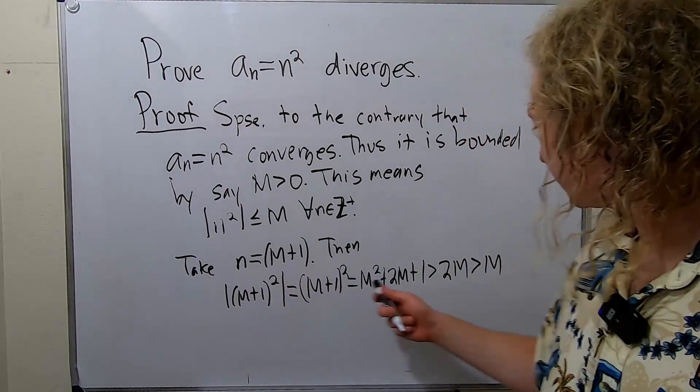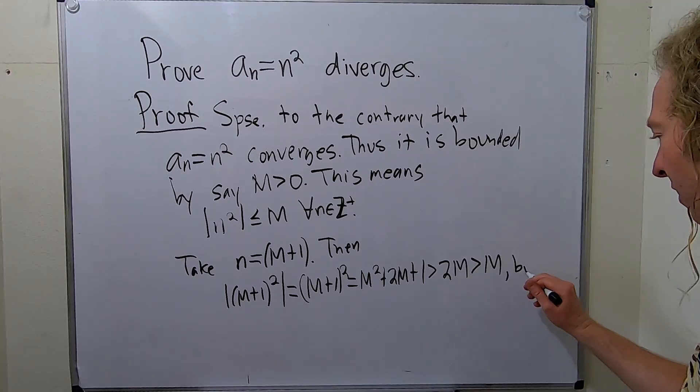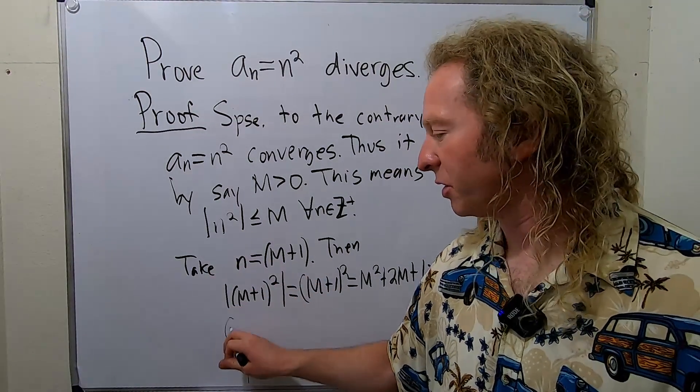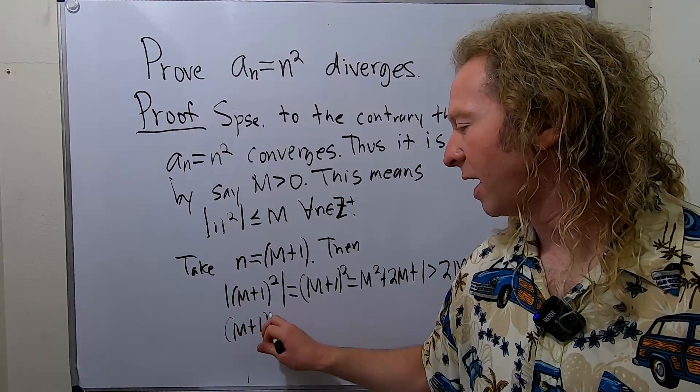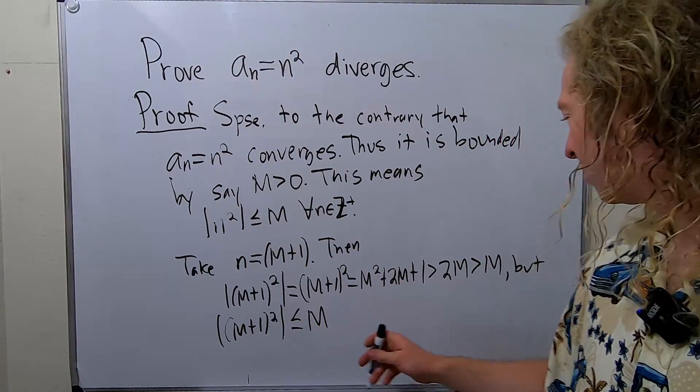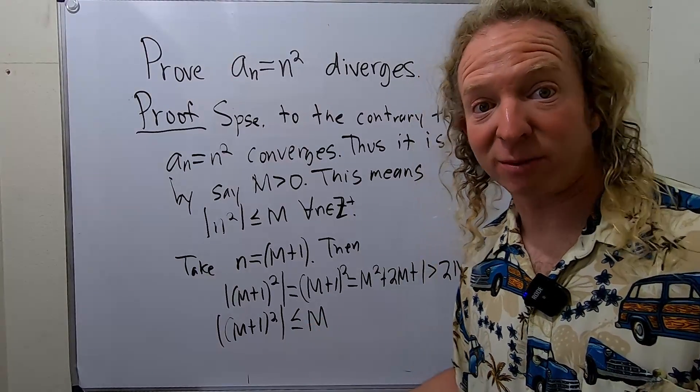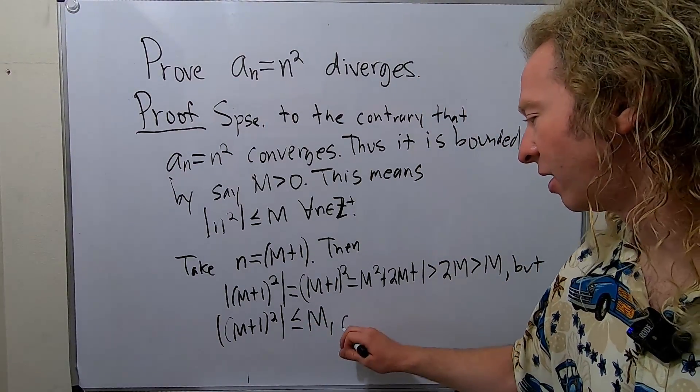So we have that this is bigger than M. On the other hand, |(M+1)²|, according to our condition here, is less than or equal to M. So we have that it's bigger than M and it's less than or equal to M. That's not possible. It's a contradiction.